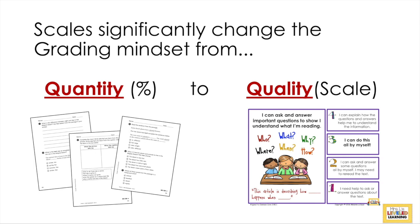Some of the important questions include: who, what, why, where, when, how. The scale shows that a student at level three would be totally proficient — able to ask questions pertinent to understanding the story. Level two means they can ask and answer some questions by themselves, but they might need to reread and some of their questions might not be totally relevant. Those things indicate a lower quality of proficiency.